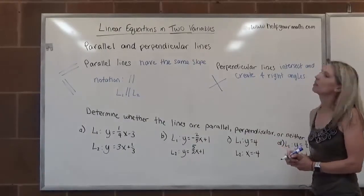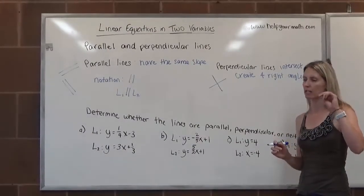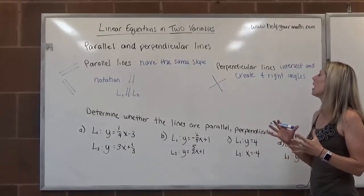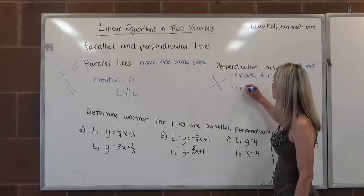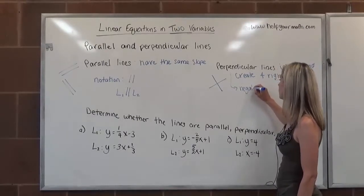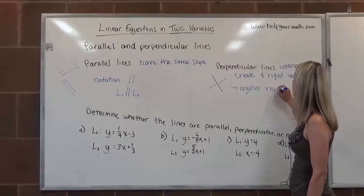So perpendicular lines, they have to have two special traits about their slopes. Their slopes, it's called negative or opposite, however you want to think about it. I usually use negative, which maybe I shouldn't. But I say negative reciprocals.